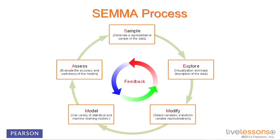This is how SEMA looks. It starts with sampling — generating a representative sample of the data — basically taking a portion of the large data set and hoping that portion is a true representation of the complete data set, which we often call the population. A sample should be a good and true representation of the population. You do what you need to do with better sampling techniques so that your sample actually represents the patterns in your population.